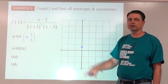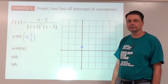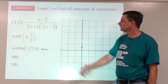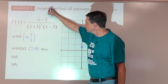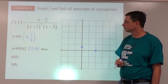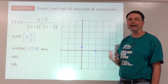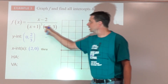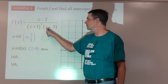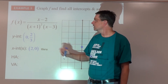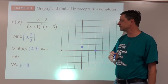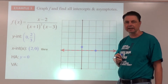The x-intercept comes from the numerator: x equals 2, so (2, 0). Since that factor would be to the first power, it's a pass-through x-intercept. For horizontal asymptotes: if we multiply out the denominator, we'd get x squared times x, which is x to the third. The degree on top is smaller than the degree on the bottom, so the horizontal asymptote is at y equals 0.